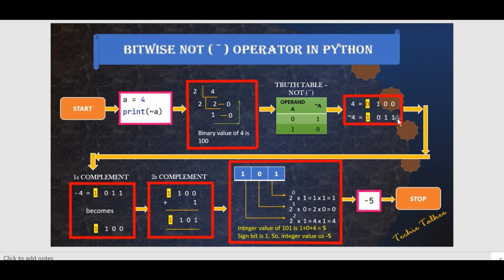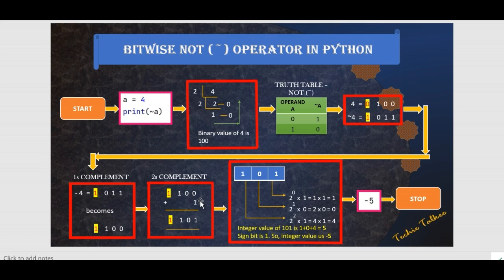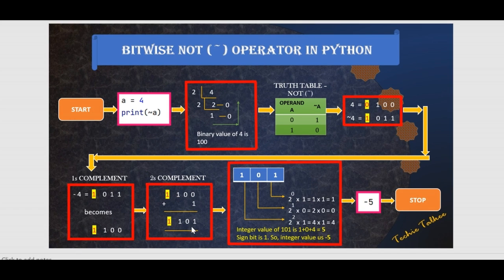For representing this binary value in 2's complement form, we keep the sign bit aside — let it be 1. The NOT of 4 gives us 0, 1, 1. The 1's complement of this binary value will be 1, 0, 0 — it just reverses the bits: 0 to 1 and 1 to 0. So this 1 reverses to 0, this 1 reverses to 0, and this 0 reverses to 1. On this 1's complement value, we do the 2's complement by adding 1. So the 2's complement value is 1, 0, 1 with a sign bit of 1, meaning it is a negative value.